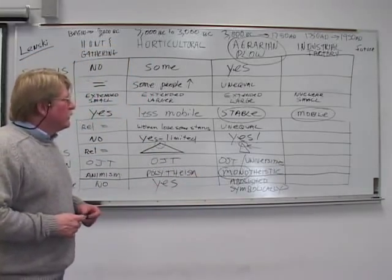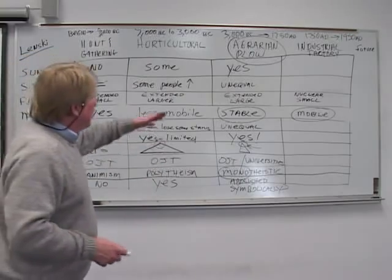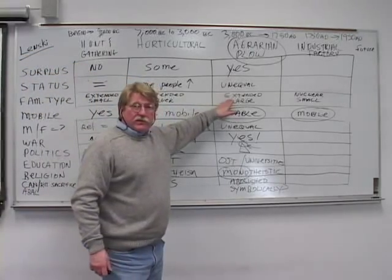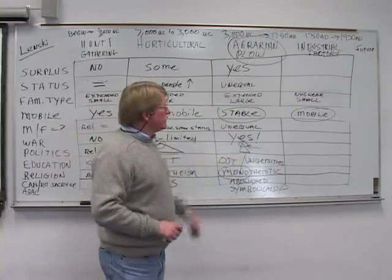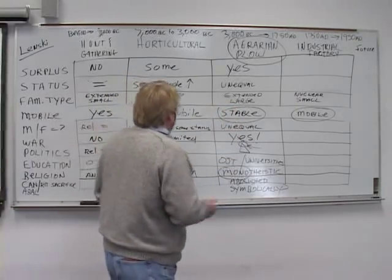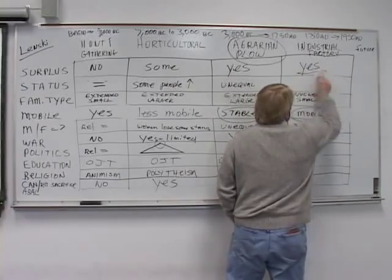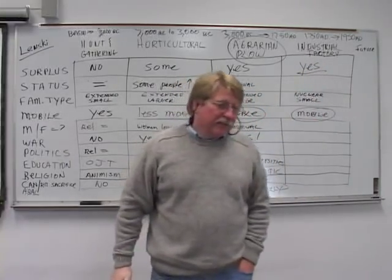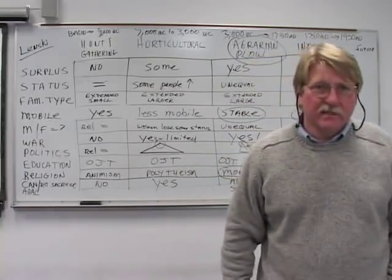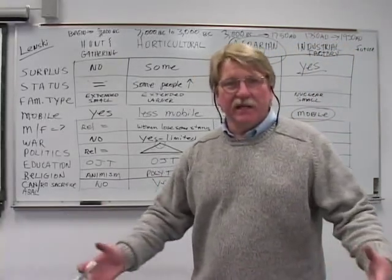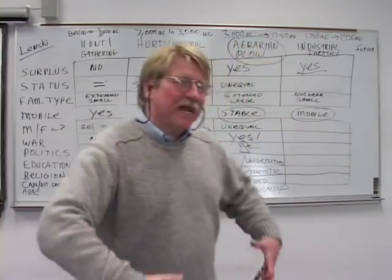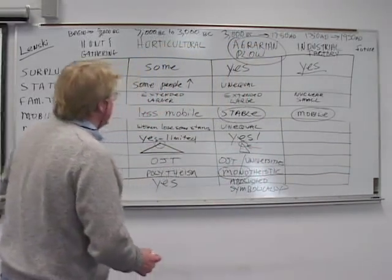But oddly enough, even though we have a 50% divorce rate, in the agrarian era, 50% of the families were also broken, not by divorce, but by death of one of the spouses. Do we have a surplus? Unbelievable surplus. When I traveled through China, I found out not only did they not have garages to have garage sales, they didn't have any garages, they didn't have lots of surplus to be selling. And they didn't have this mass turnover of stuff that we certainly do.